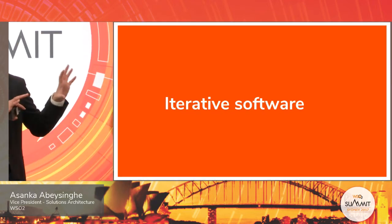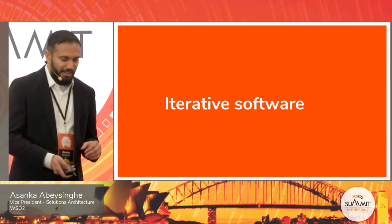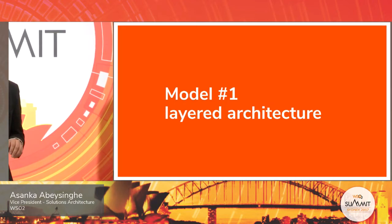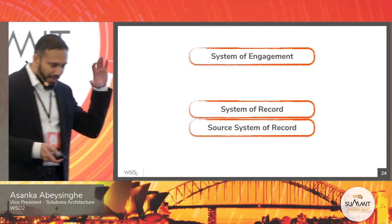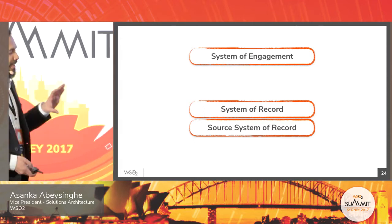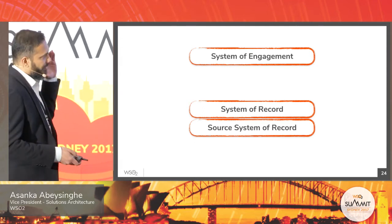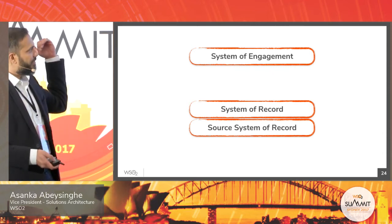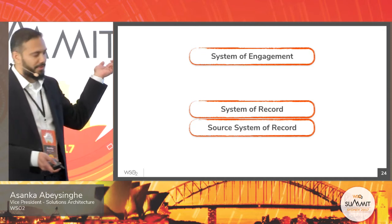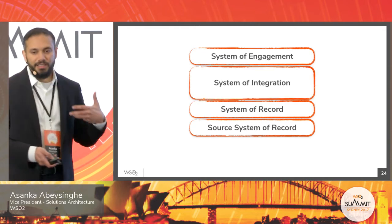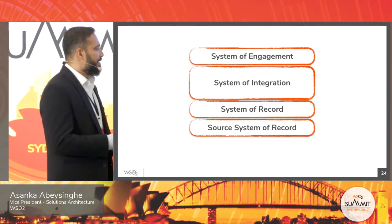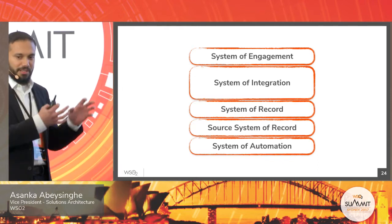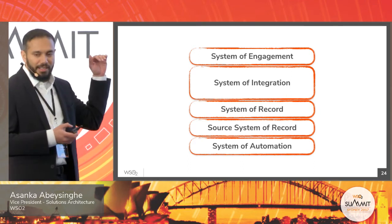Now let's look at iterative software and what we can do from the architecture side. I'm explaining two models. The first is a layered architecture model. In most projects, you have the system of record and some way of accessing the data. You can quickly bring in the system of engagement and build some products. Then you can improve it by bringing in the integration layer — making it more efficient and architecturally correct — and later bring automation as well. This is not strictly in order; based on your requirements, you can bring in each layer as needed.